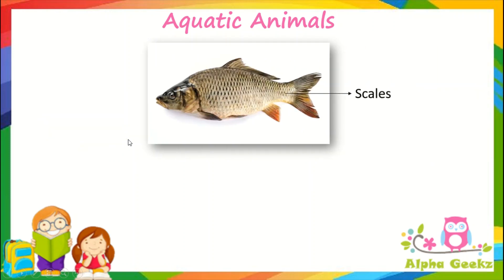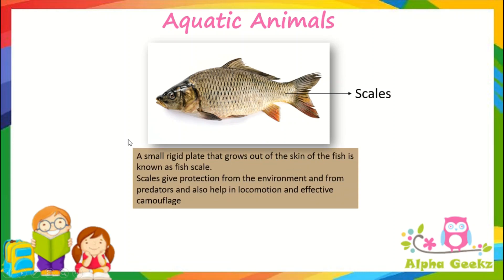Fish have scales. These scales are waterproof — they prevent water from being absorbed into their bodies. Scales also serve as a layer of protection from attacks from predators, injuries, or parasites. They also help in locomotion and effective camouflage.